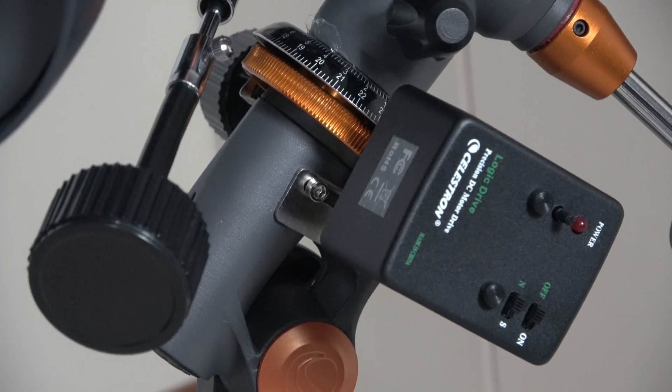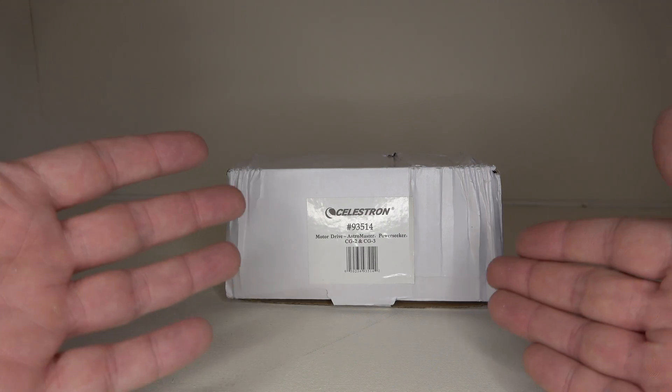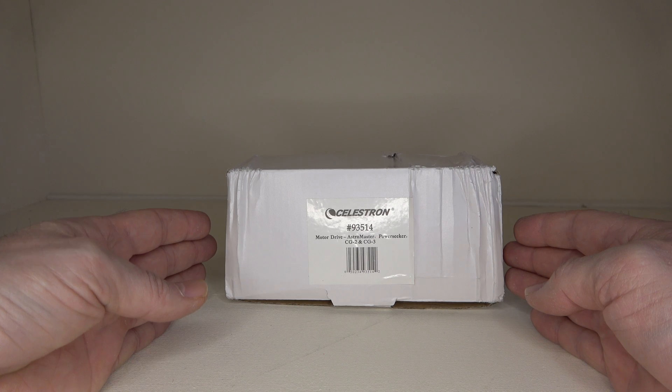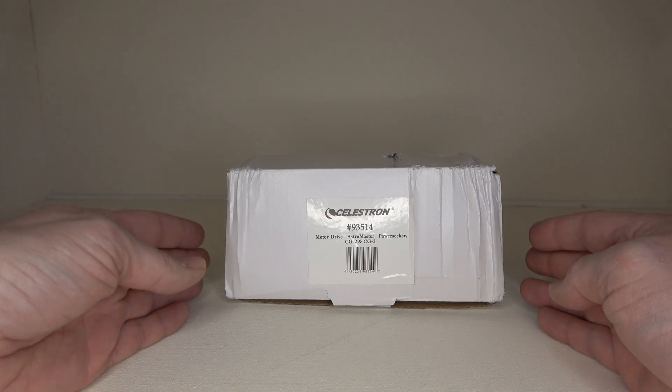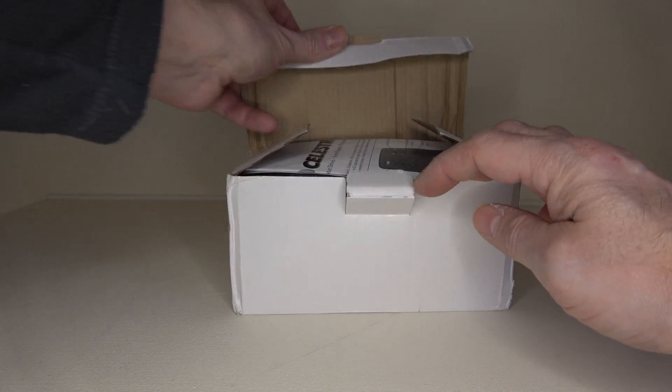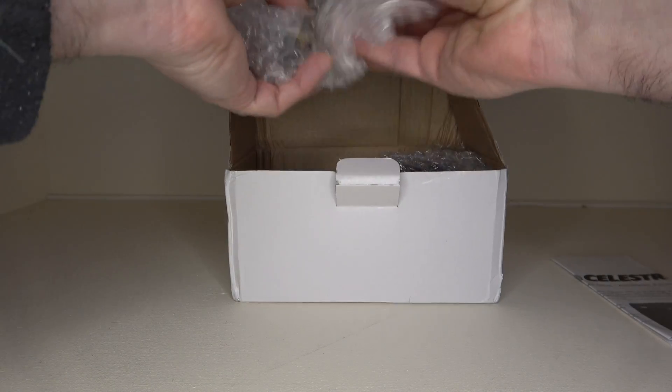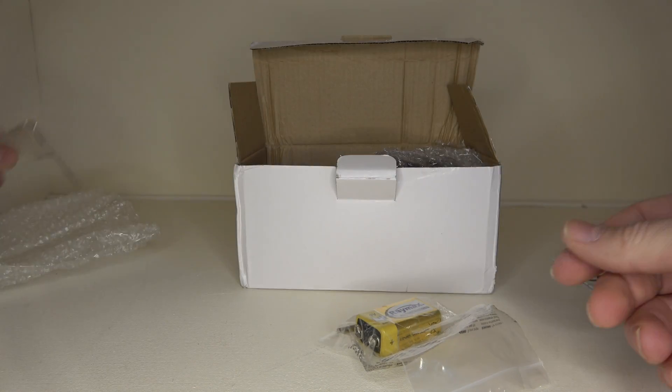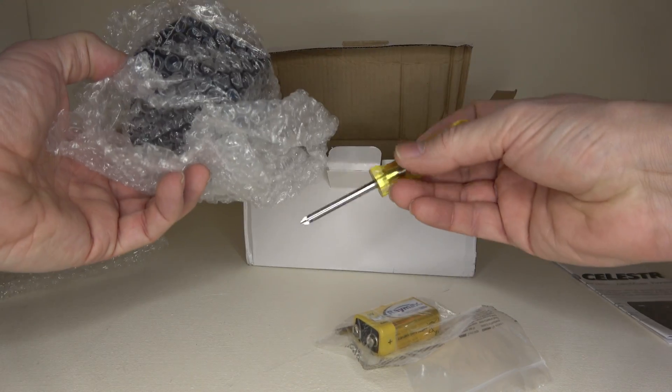So here's the motor drive for the Celestron telescope. This is the 93514 logic drive, and it's for various telescopes from the Celestron range. We're going to have a look what's inside here. So obviously some instructions there, a battery and a bracket for a different type of mount. We have a screwdriver in here as well.